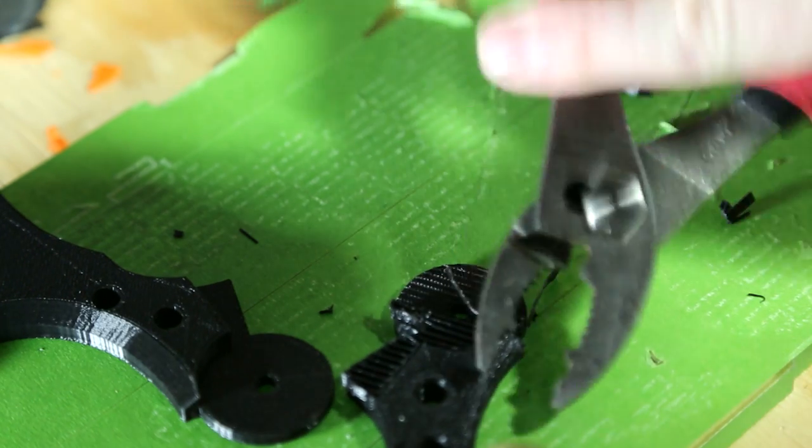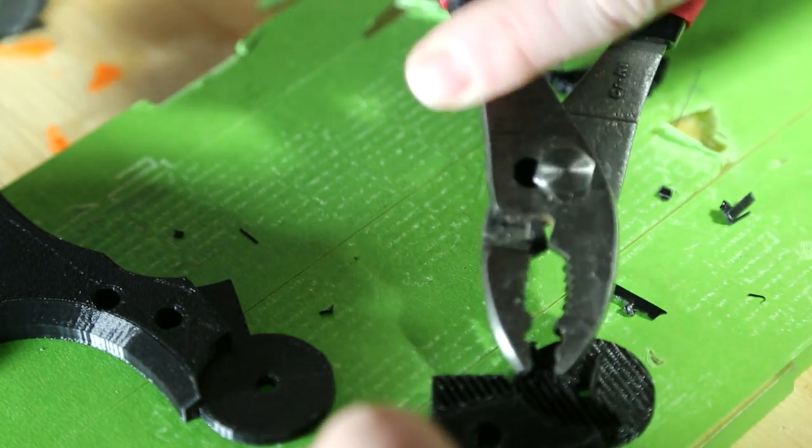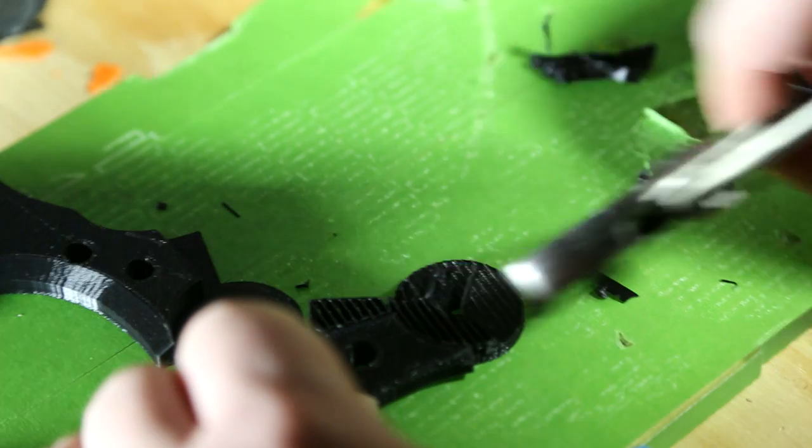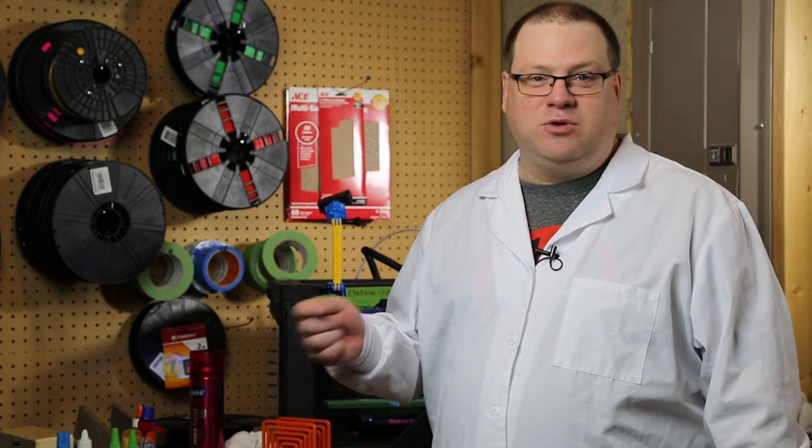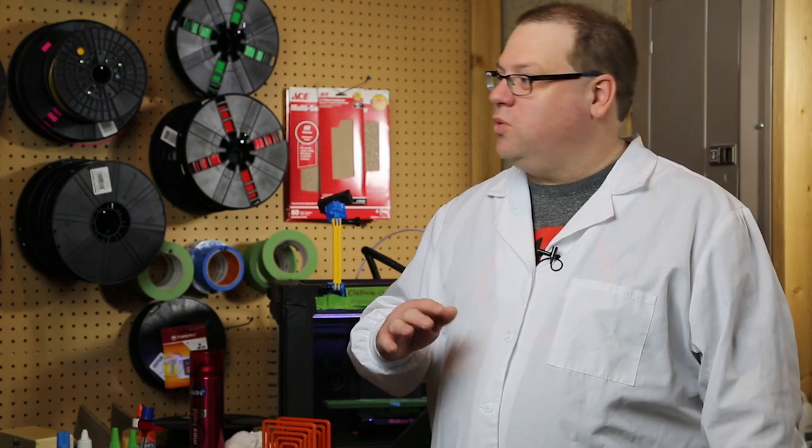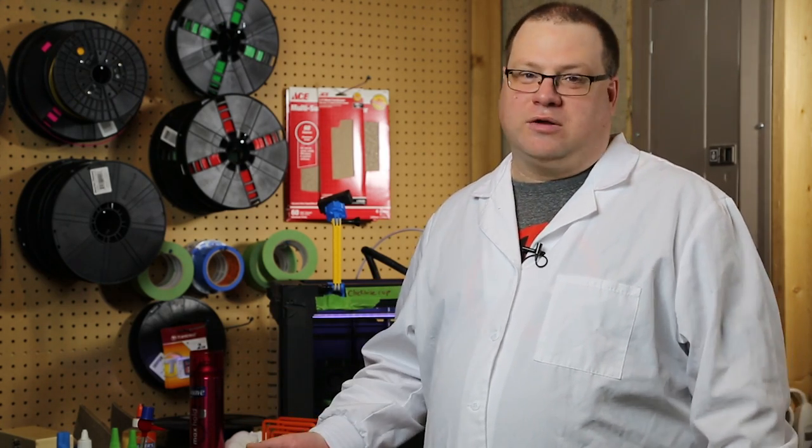Now, you can again use your fingers, or you can use a putty knife, or in this case, I'm just using a pair of pliers to pull it all off. You could use an X-Acto knife to cut it away, pick and pry, whatever that you use to break it off. Go for it.